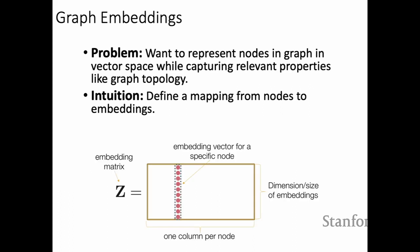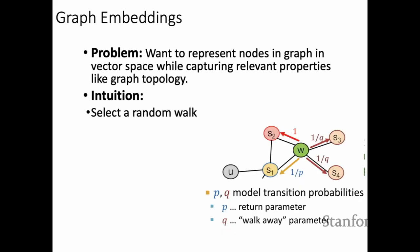For the embedding we use a shallow embedding where every column corresponds to a node. We define node similarity in the original graph using random walks: we start a random walk at each node, and nodes whose random walk neighborhoods overlap are considered similar. In lecture we discussed BFS versus DFS inspired random walks. The node2vec algorithm uses a biased random walk with parameter P controlling the probability of going back toward the starting node, and parameter Q controlling the probability of going further away.